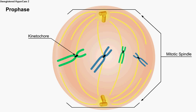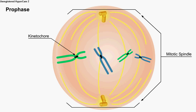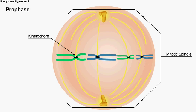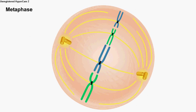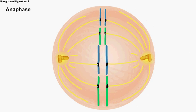The centrosomes continue to move toward the poles, pulling the chromosomes into alignment along the central plane of the cell. This stage is called metaphase.